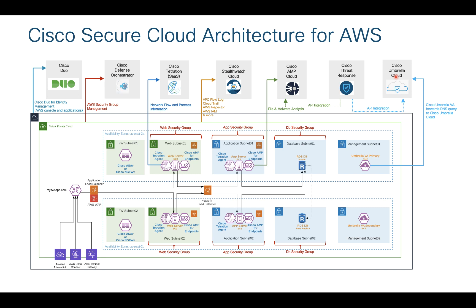Another important thing is Cisco Threat Response, which is a very good tool for threat hunting and visibility. It has powerful API integration with AMP for Endpoints and also integrates with Cisco Umbrella Cloud. You can see what is happening, take actions, and there are many things you can do with CTR.